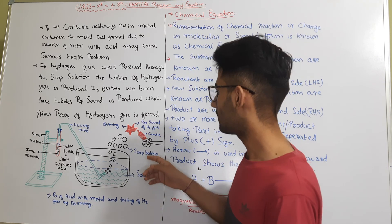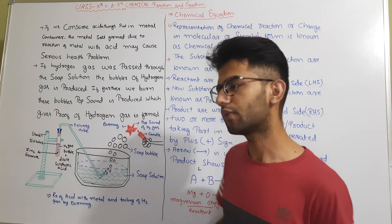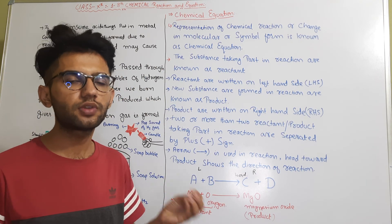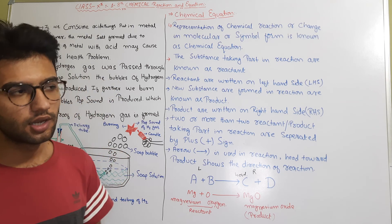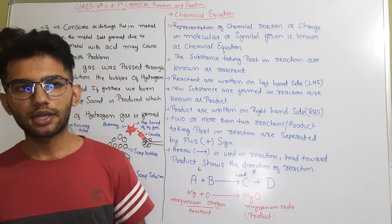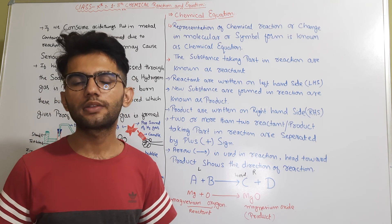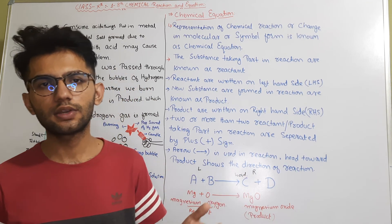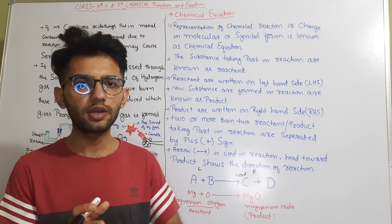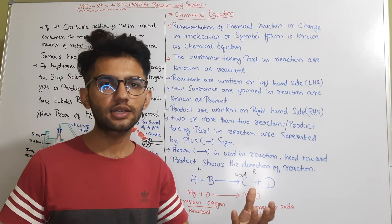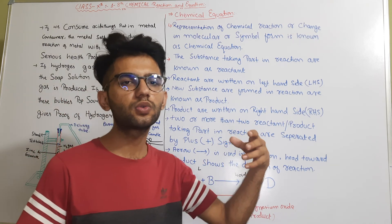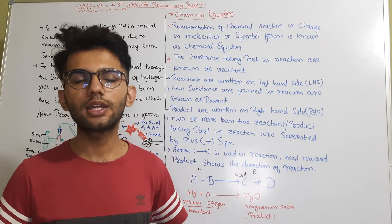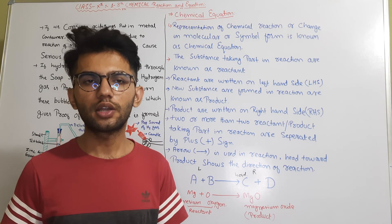Now, what is a chemical equation? The representation of a chemical reaction in a simple form is generally known as a chemical equation. The reactions that occur in our world — if we want to represent them in words, it is complicated, because sometimes one reaction's product participates in another reaction, and that reaction's product participates in a third, and so on.